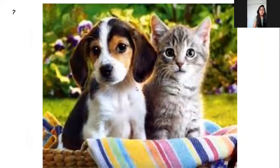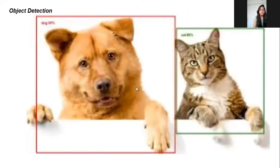Object detection will create a bounding box around each object. In this image there were two objects — one was a dog and the other was a cat — so object detection will try to create the bounding box across all the objects present inside your image.